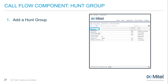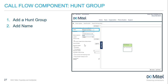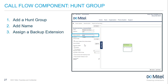To add a hunt group, select Hunt Group from the drop-down menu. Name the hunt group and confirm or edit the automatically assigned system extension. Leave Make Extension Private unchecked if you want this hunt group to be listed in the internal company directory. You must also list a backup extension — this is the extension called if the hunt group is unavailable or unreachable. Assign the hunt group to a location where most of the hunt group members reside.